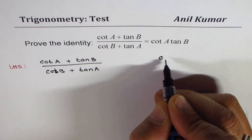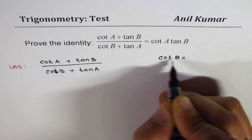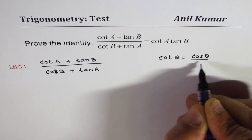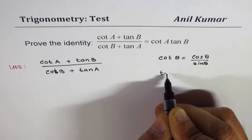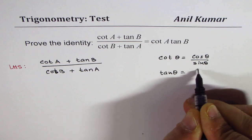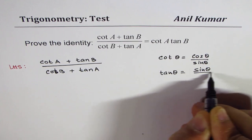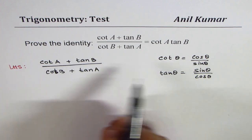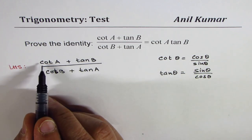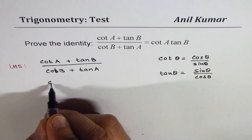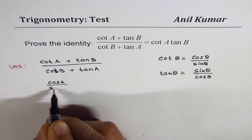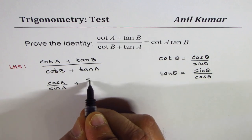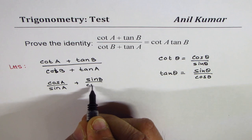Now, as you know, cot theta equals cos theta over sin theta, and tan theta equals sin theta over cos theta. So in the first step, we will write everything in terms of sine and cosine. We can write cot A as cos A over sin A, and tan B as sin B over cos B.